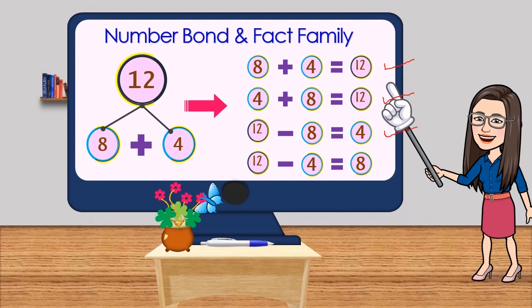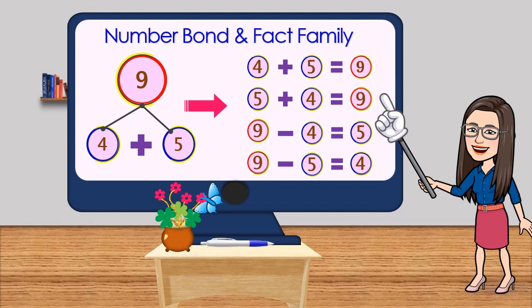Nine - the numbers that bond to 9 are 4 and 5, so we can combine 4 and 5 to make 9. Its fact family are: 4 plus 5 is equal to 9, and 5 plus 4 is also equal to 9.